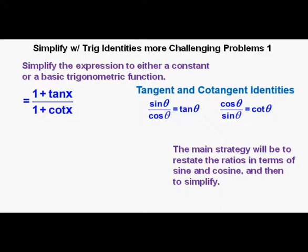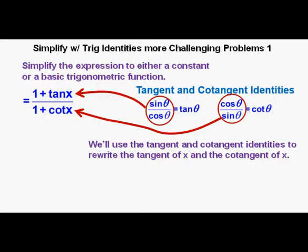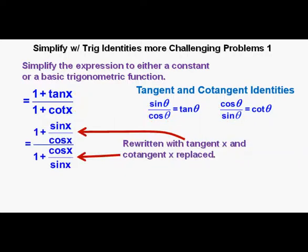Here are the tangent and cotangent identities. We'll use the tangent identity to rewrite tan x, and the cotangent identity to rewrite cot x. With the replacements, we have (1 + sin x / cos x) over (1 + cos x / sin x).